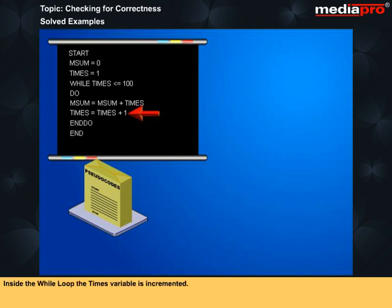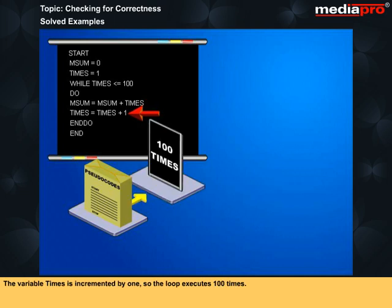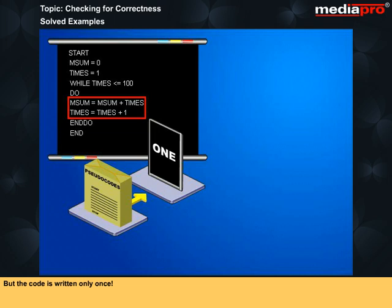Inside the while loop, the times variable is incremented. So while executing the while loop, the value in times is checked. Whenever it is below or equal to 100, the value of m_sum is changed. The variable times is incremented by 1, so the loop executes 100 times. 100 additions are performed with different values, but the code is written only once.